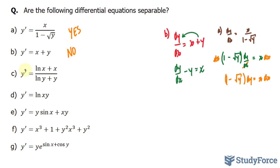Moving on to question (c): after changing this to dy over dx, if I multiply both sides by what's in the denominator position, I'll have the y terms on the left side and the x terms on the right side. So this one is separable.